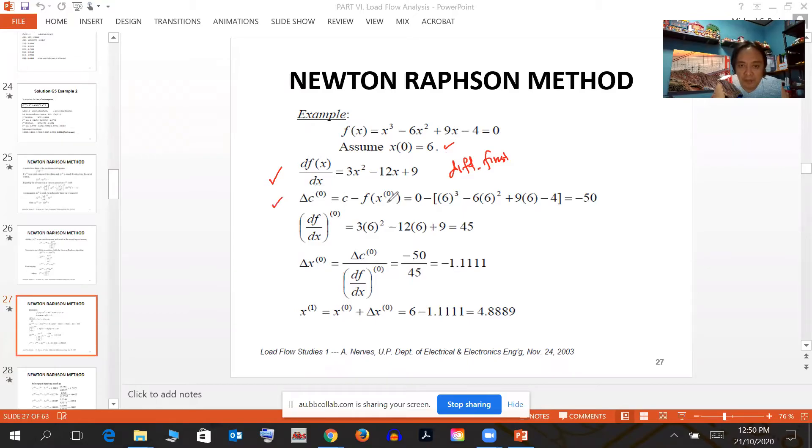Substitute that into the equation. After you substitute, you need to differentiate the function. Differentiate first: 3x squared minus 12x plus 9, constant is zero. That's the first differential. Now delta x, which is c minus f(x), substitute 6 to get negative 50.